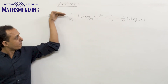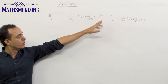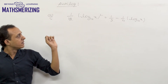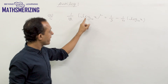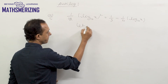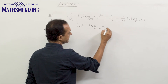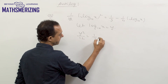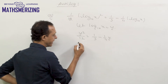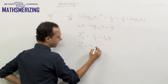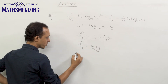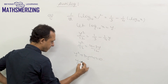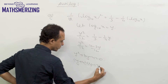Another question: solve for x where (1/12)(log x base 10)² = 1/3 − (1/4)(log x base 10). This is a quadratic equation in log x base 10. Letting y = log x base 10 and taking LCM: y²/12 = (4 − 3y)/12, giving y² + 3y − 4 = 0, which factors as (y + 4)(y − 1) = 0.